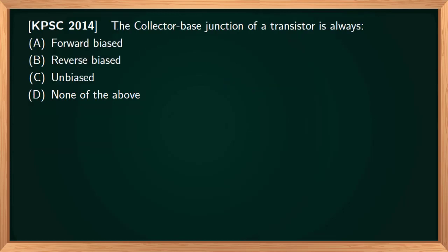The collector-base junction of a transistor is always: Option A, forward biased; Option B, reverse biased; Option C, unbiased; Option D, none of the above. In a transistor that is operating in amplifier or linear region or active region, the emitter junction is forward biased.